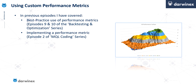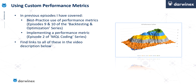I've actually covered custom performance metrics in three episodes now. The first two were episodes 9 and 10 of the backtesting and optimisation series, where I looked at how to get the most out of custom performance metrics. Then in episode two of the MQL coding series, I looked at how you'd go about implementing a performance metric in MQL5. You can find links in the description below.